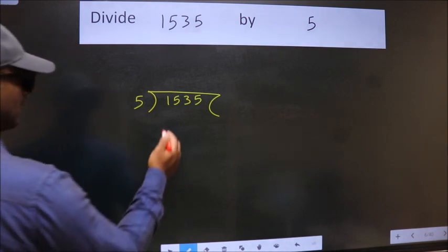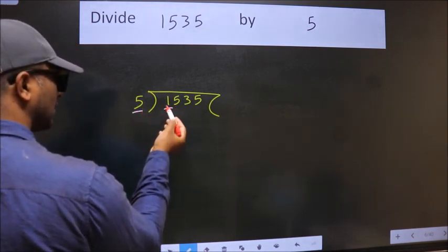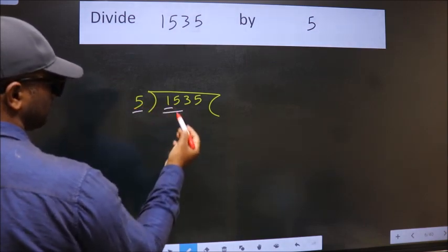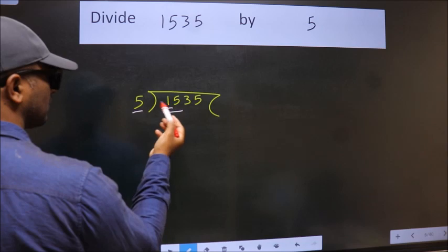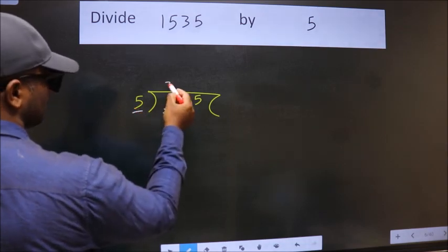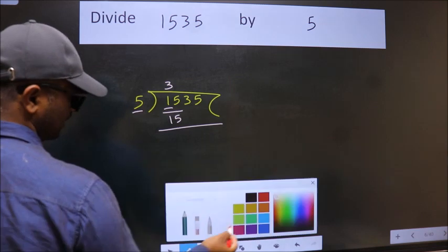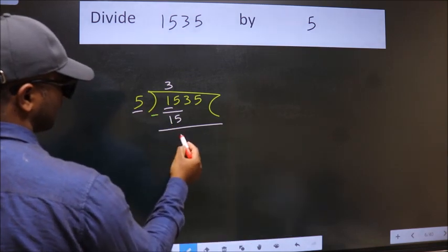Next, here we have 1. Here 5. 1 is smaller than 5, so we should take 2 numbers: 15. When do we get 15 in the 5 table? 5 times 3 is 15. Now we should subtract. We get 0.